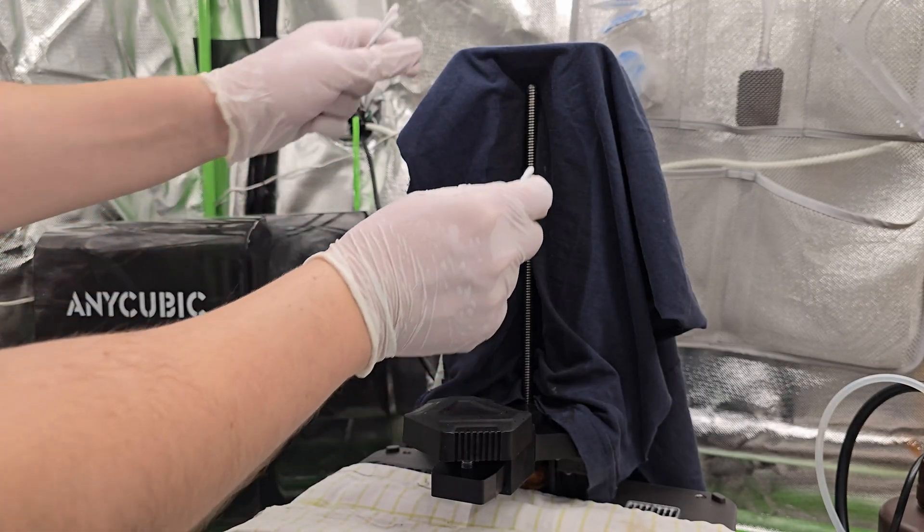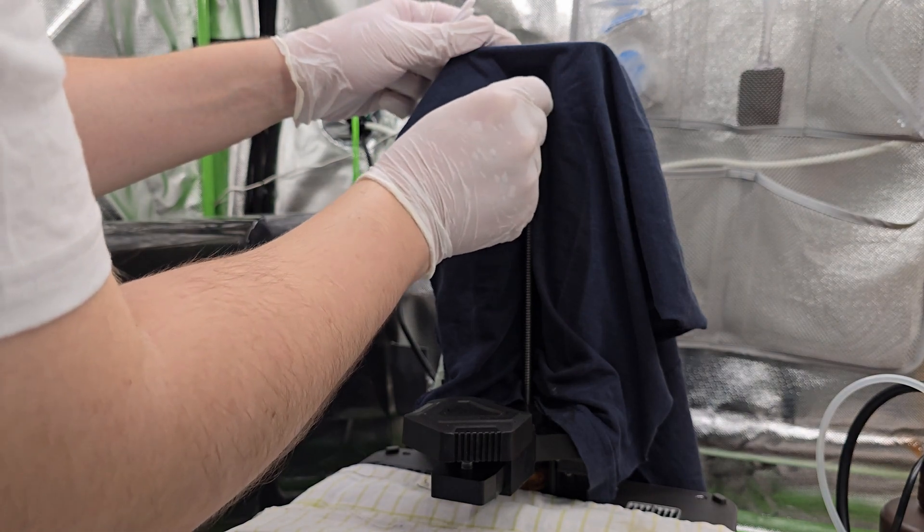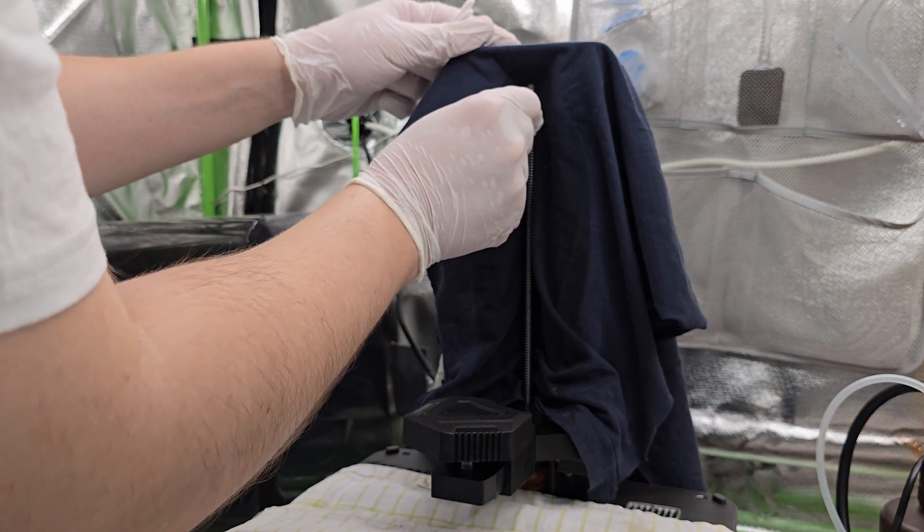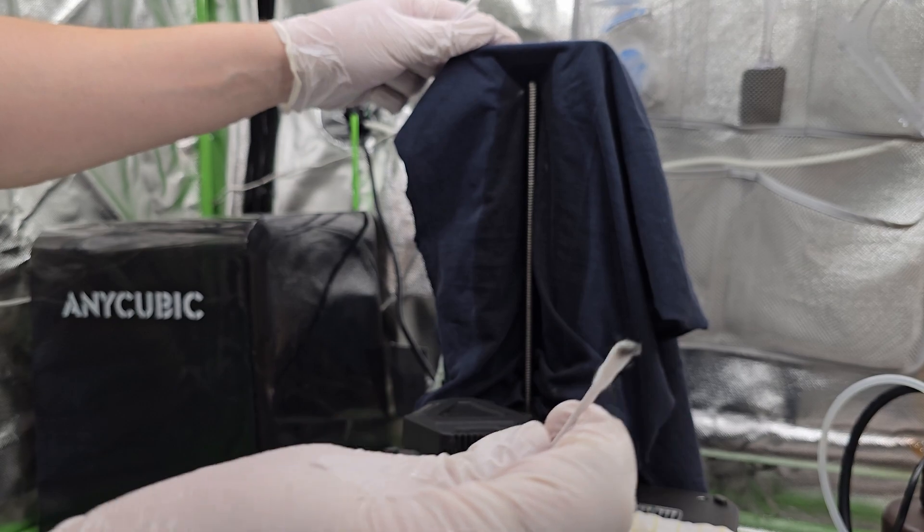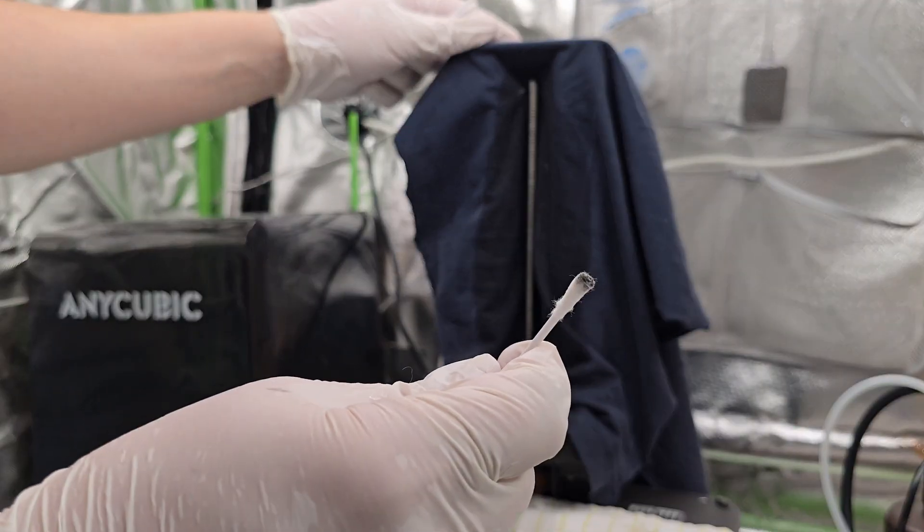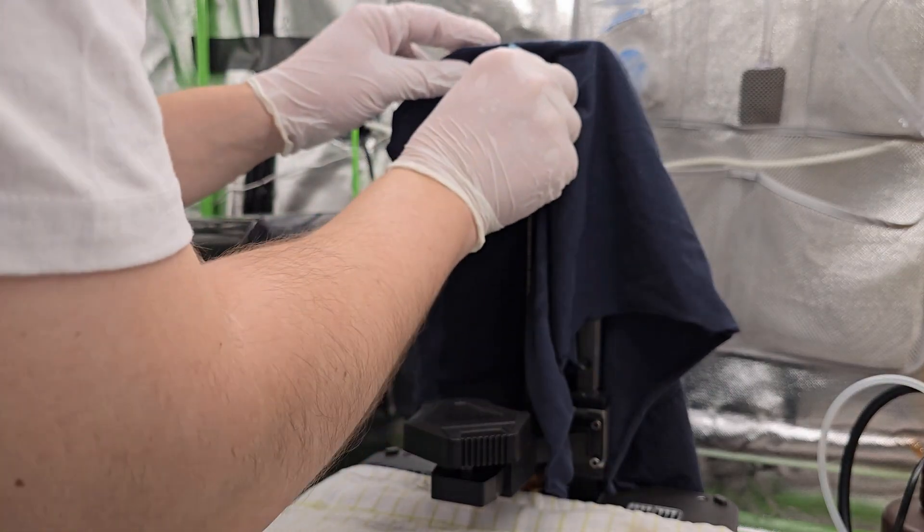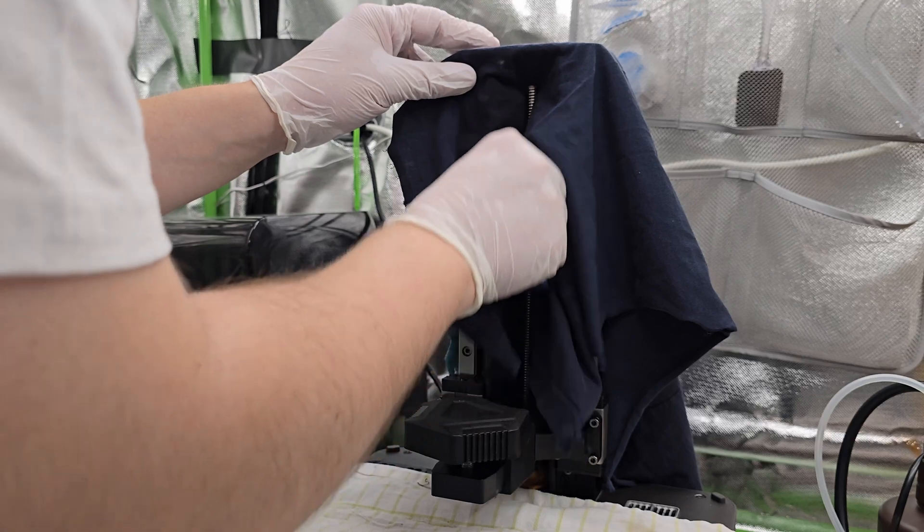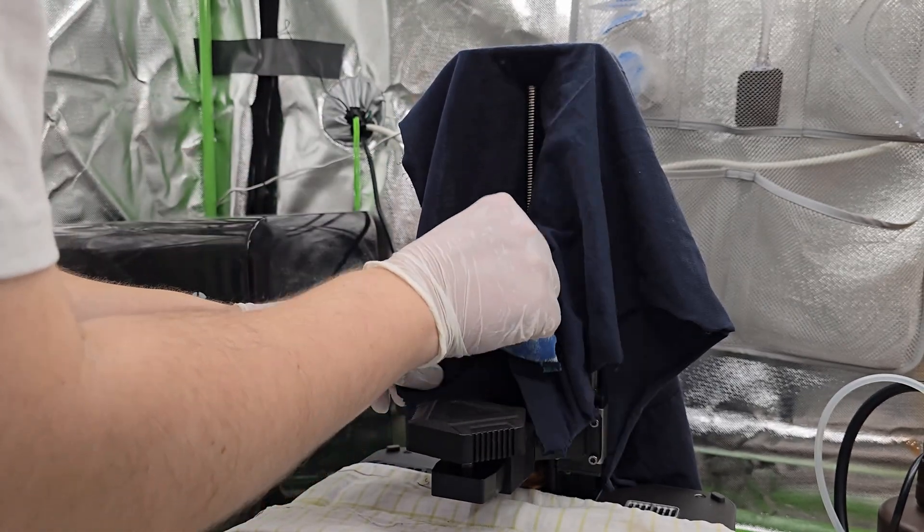If you want to clean it even more detail, use ear swabs to get to hard to reach places. This should be enough, but if you want to go the extra mile, you can follow it up by wiping the whole rod with IPA. It evaporates quickly and makes sure there is no residue before we apply new grease.